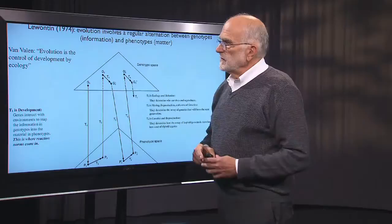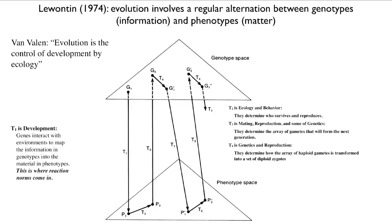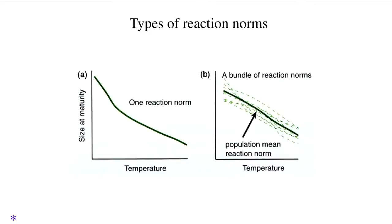All of this is captured in Lee van Valen's phrase that evolution is the control of development by ecology. Another take-home message is that you can't change phenotypes without changing development — development is an essential part of evolution. If we look at an abstraction of development, which is the reaction norm approach, we can see certain important things.